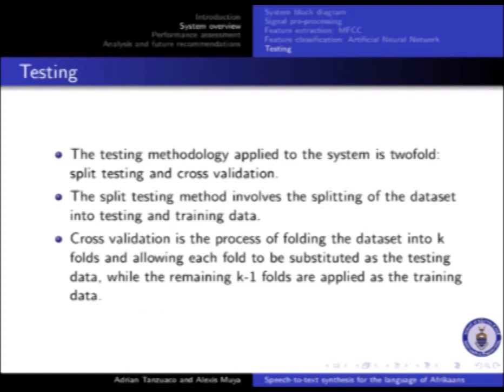This is a basic diagram for multilayer perceptron. The final stage in the design is testing. The testing methodology applied to the system is two-fold: split testing and cross-validation. The split testing method involves splitting the dataset into testing and training data. Cross-validation is the process of folding the dataset into K-folds and allowing each fold to be substituted as the testing data, while the remaining K-1 folds are applied as the training data.